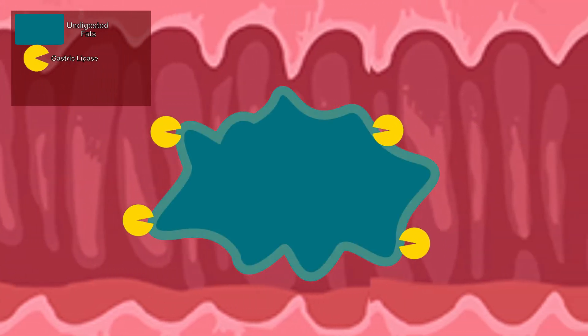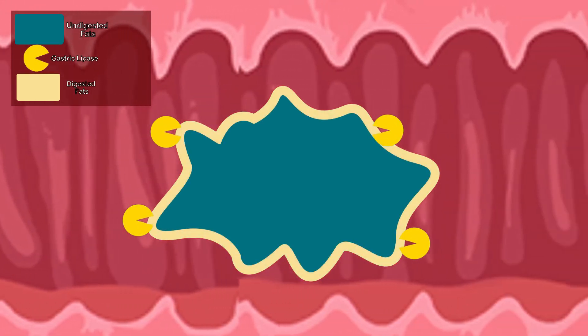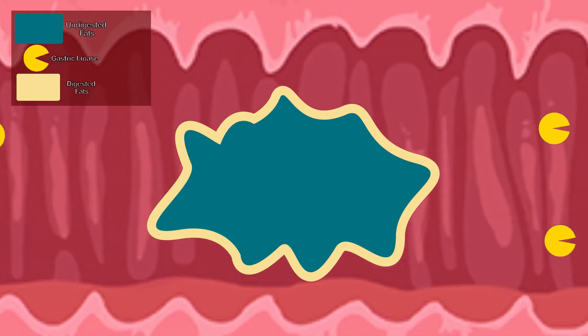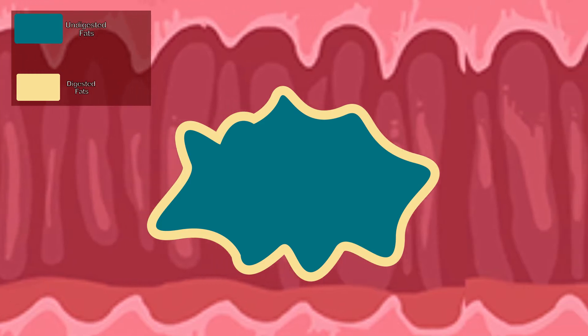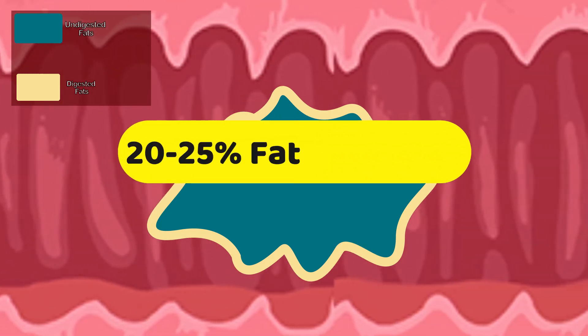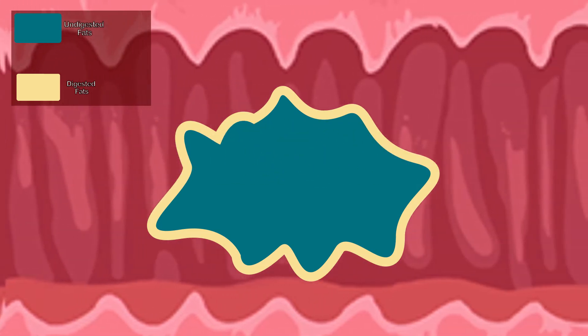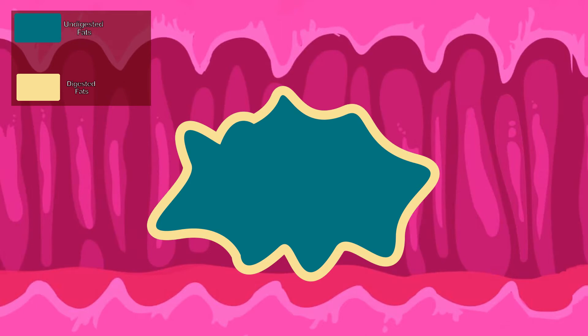Inside our digestive systems, fats have a tendency to stick around and form clumps, just like oil droplets. But the enzymes we have are all water-soluble and not fat-soluble, so they cannot really penetrate deep into these structures and digest all of the fat — they can only act on the surface. That's why we get only about 20 to 25 percent of fat digestion in the stomach, with the help of gastric lipase.